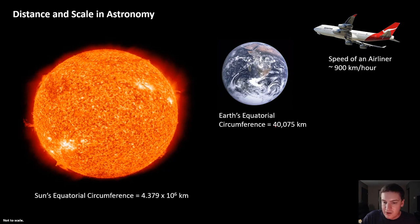So we can figure that out. We can take 40,075 kilometers, divide that by 900 kilometers per hour, cancel our kilometers. And what we'll find out is that it takes about 45 hours for the average airliner to fly around the Earth.